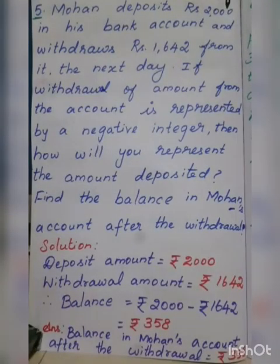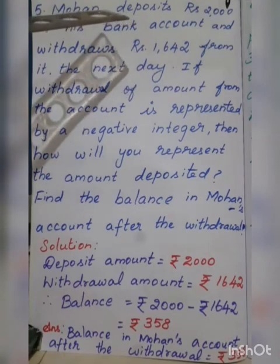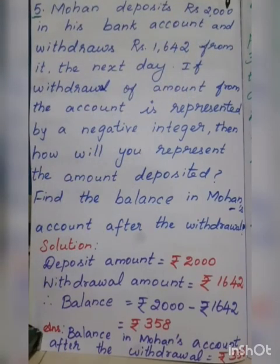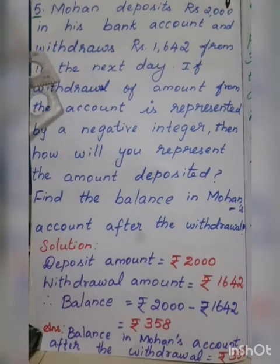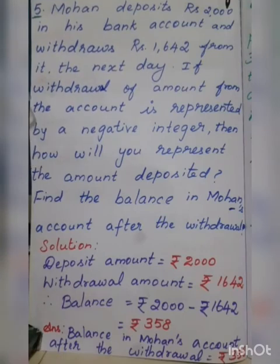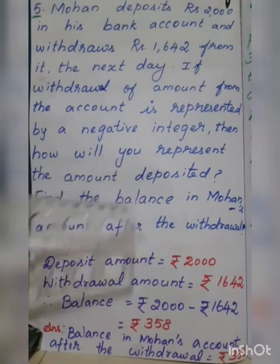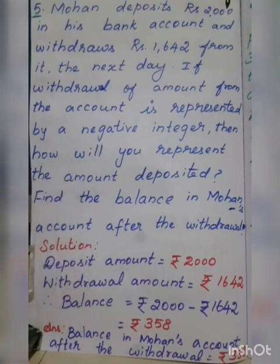Fifth sum. Mohan deposits rupees 2000 in his bank account. Deposit means the sum of money paid into the bank account — it is a positive integer, the money will be increased. He withdraws rupees 1642 the next day. Withdraw means taking money out of the bank account, so the money is decreasing — a negative integer. If withdraw is represented by a negative integer, deposit is represented by a positive integer. Find the balance in Mohan's account after the withdrawal.